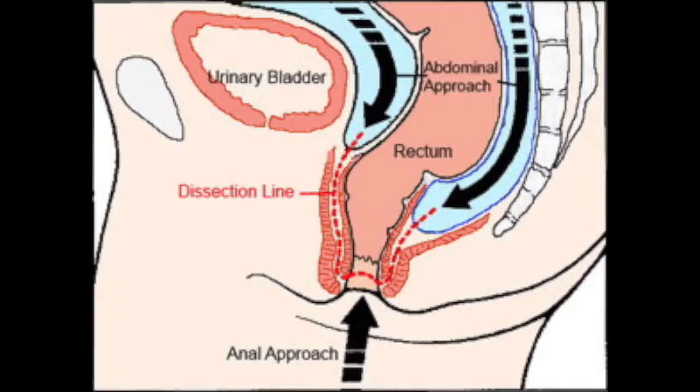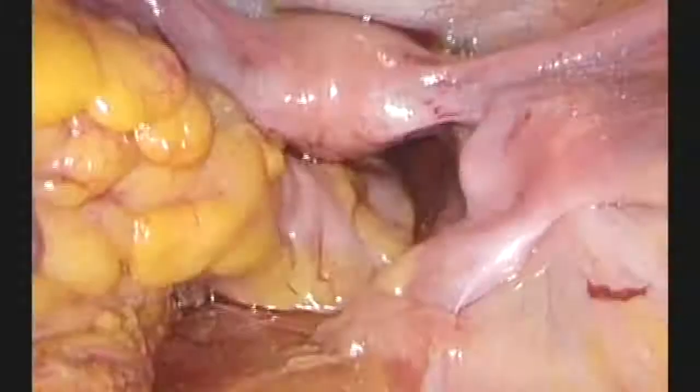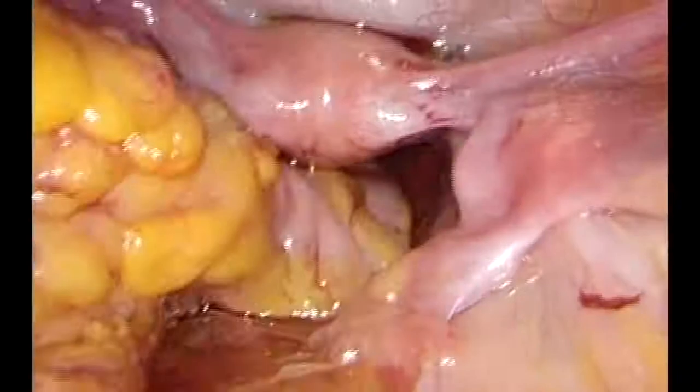The transanal dissection is facilitated by a long Star retractor. The rectum is divided above the dentate line and resected in the intrasphincteric plane, communicating with the abdominal approach. Once the dissection is completed, the rectum is extracted transanally.